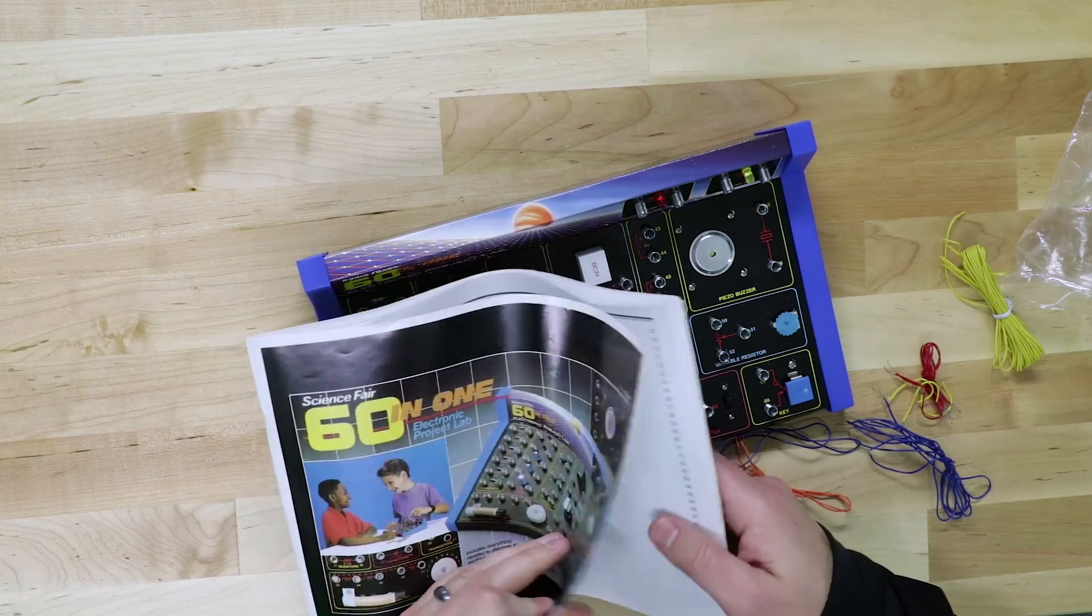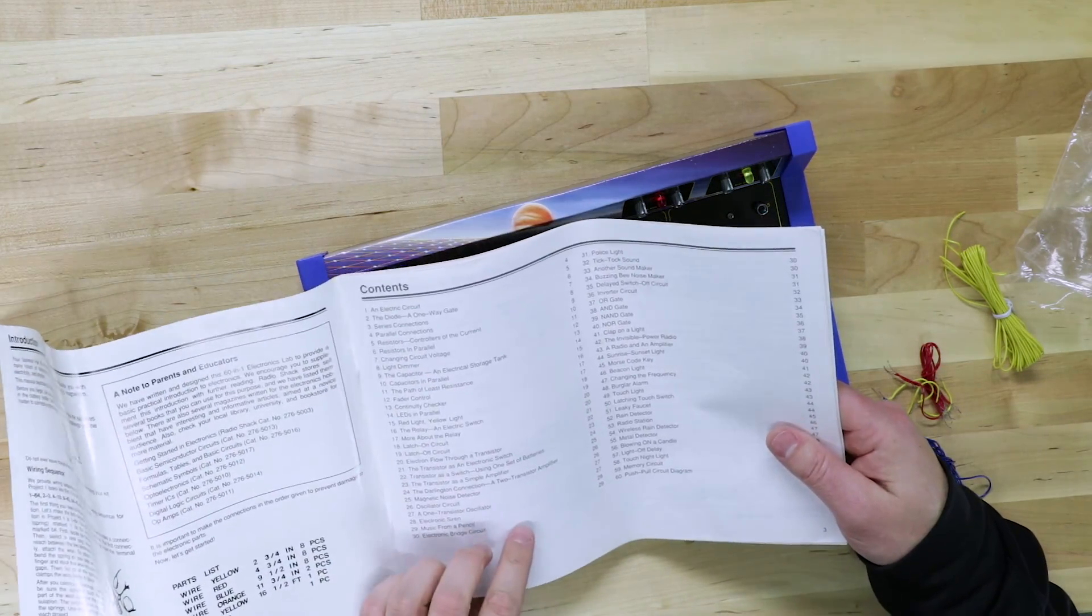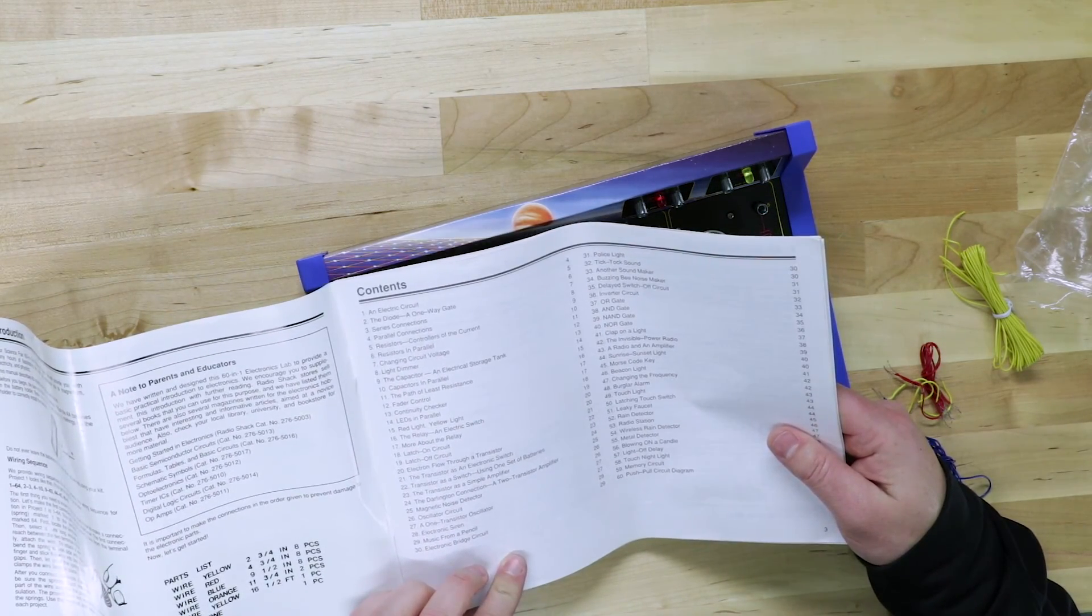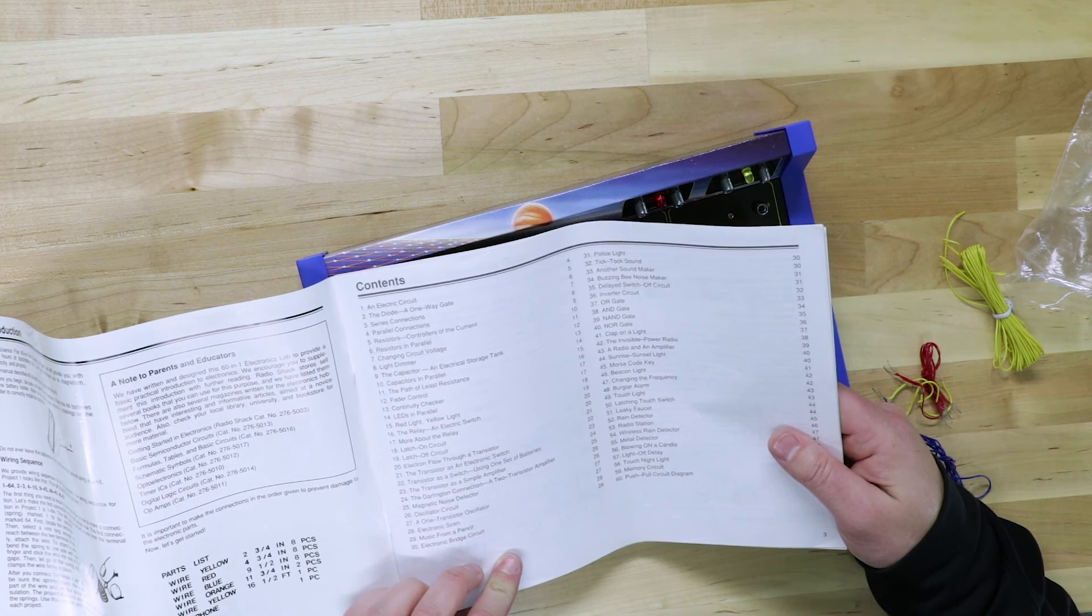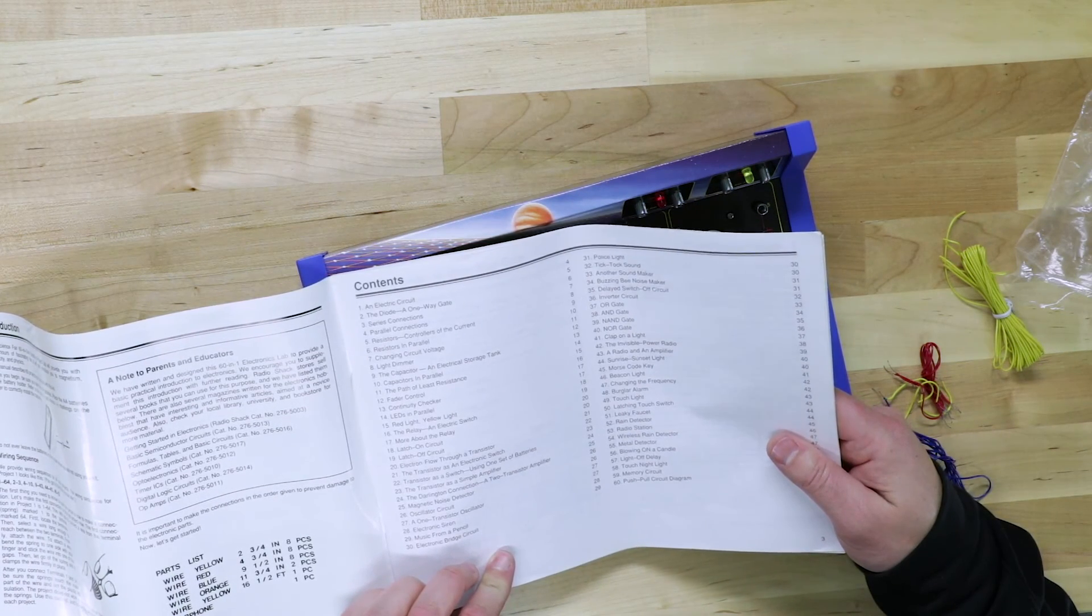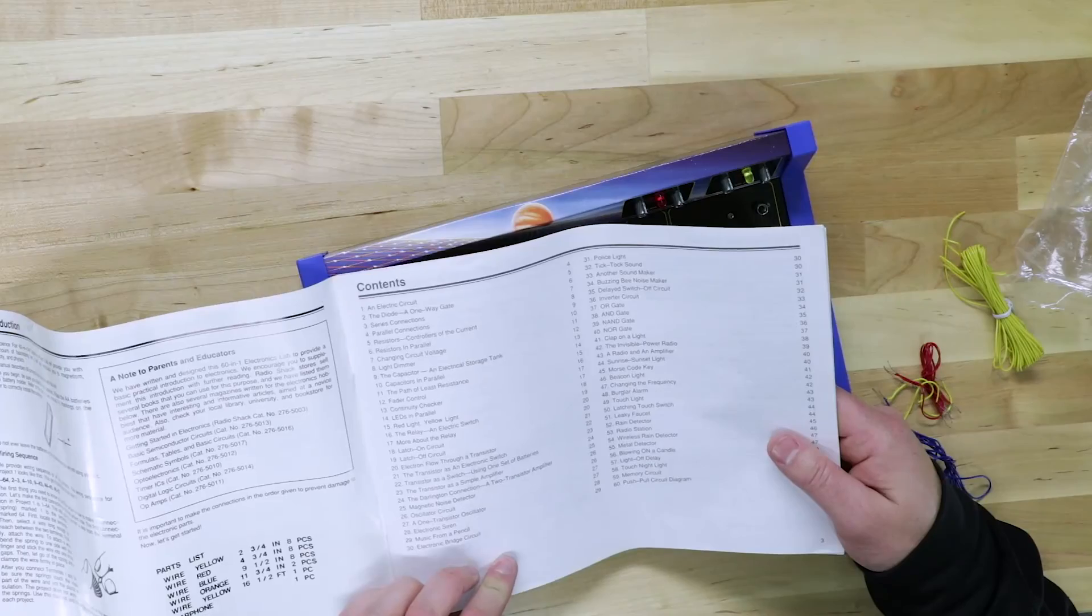So let's go ahead and just open up the manual and let's see if I can find something simple. So a light dimmer, that sounds like maybe something simple. Let's go with a police light.